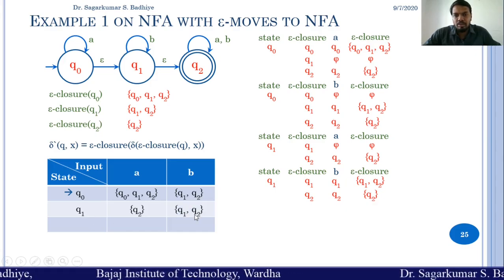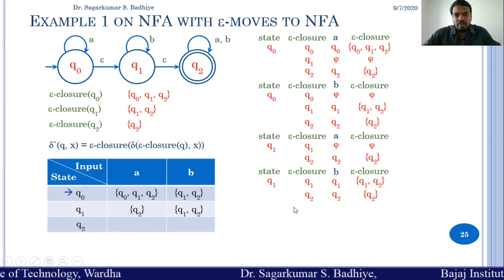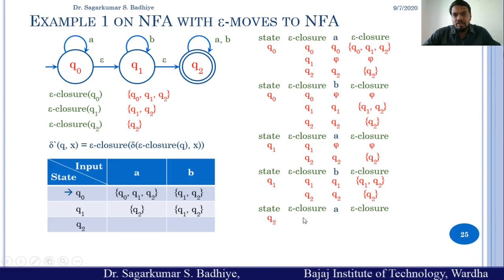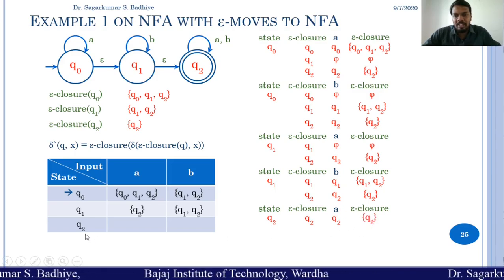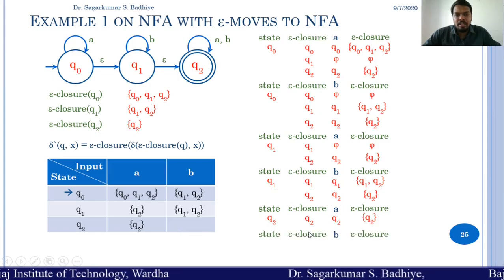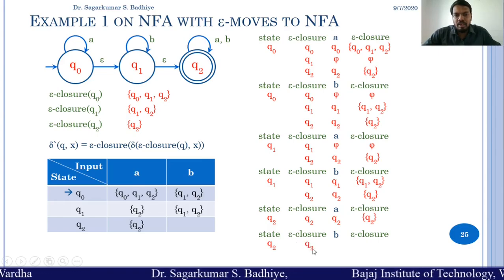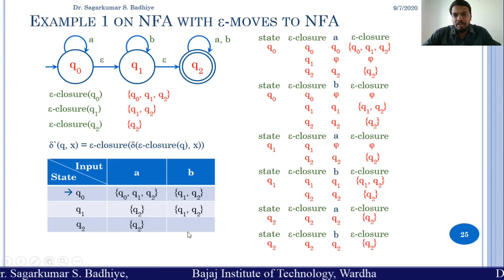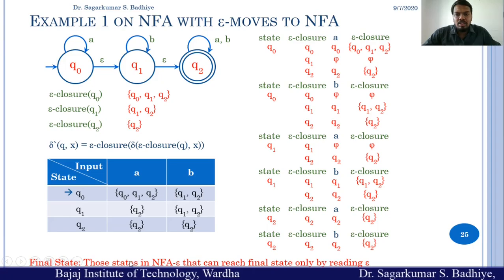For state q2: epsilon closure of q2 is q2. Q2 on A goes to q2 and epsilon closure of q2 is q2, so we add a transition from q2 on A to q2 in the equivalent NFA. Similarly, for q2 on B, epsilon closure of q2 is q2, and q2 on B goes to q2, so we add a transition from q2 on B to q2 in the equivalent NFA.